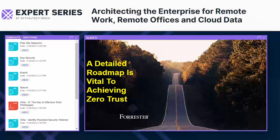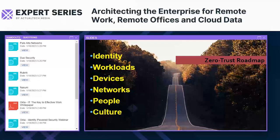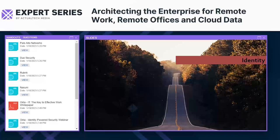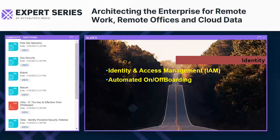The zero trust roadmap begins with identity, followed by workloads and services, networks, people and culture, and data. Starting with identity: we'll use Identity and Access Management (IAM) systems to manage and govern all identity controls. By knowing who someone is and what device they're using, we can grant them access to whatever they should have access to. This begins with automated onboarding, so you have the same process every time you bring a new employee into your IAM system and directory management.